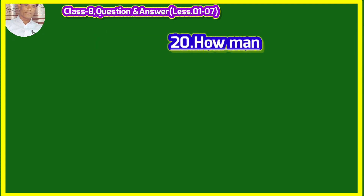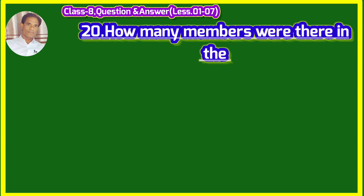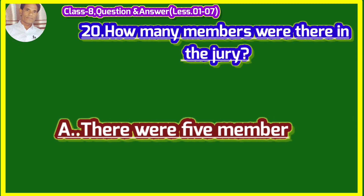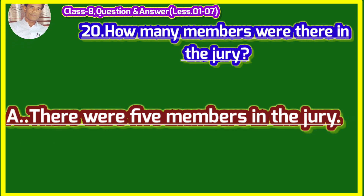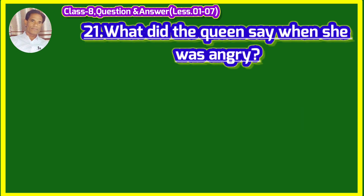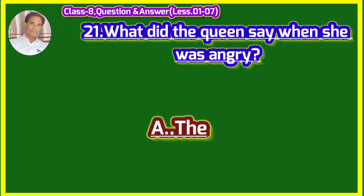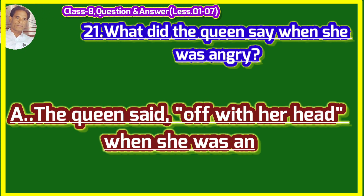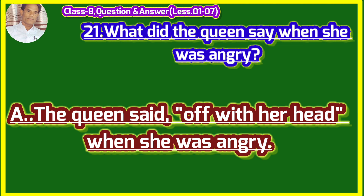How many members were there in the jury? There were twelve members in the jury. What did the queen say when she was angry? (Rani kya kya kahti thi jab vaha krodhit hoti thi?) The queen said 'off with her head' when she was angry. Rani kahti thi uska sar kalam kar do jab vaha krodhit hoti thi.